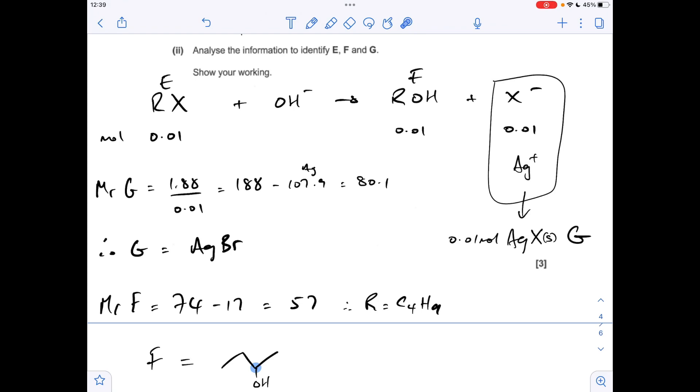So moving on to E now, we've already established that this X, this halide, is bromine. E is going to be 2-bromobutane.